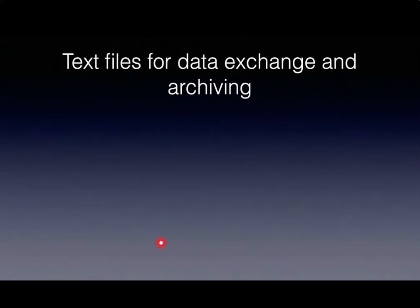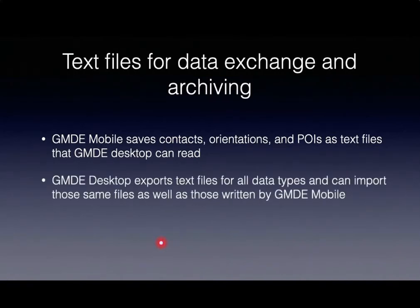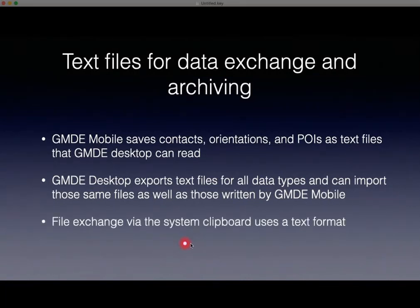Text files are used both for exchange and for data archiving. GMDE mobile saves contacts, orientations, and POIs as text files, and those text files can be read by GMDE desktop. GMDE desktop exports text files for all data types and can import those same files as well as those written by GMDE mobile. File exchange via the system clipboard uses the same text format.